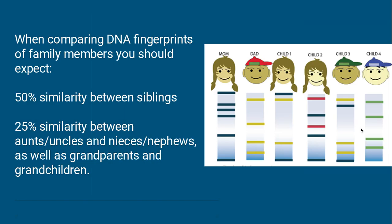Now, if you wanted to see family relationships, there is a 50% similarity between siblings. So they'll share about half of their bands with each other, or one out of every two bands should match.